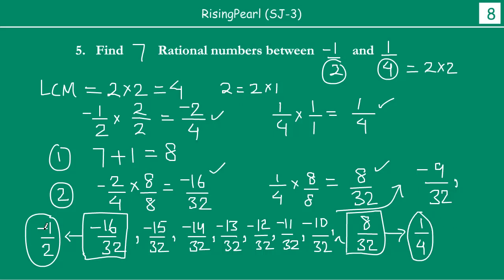You notice that between -1/2 and 1/4, which were your two original numbers, we have found 1, 2, 3, 4, 5, 6, and 7 rational numbers: -15/32, -14/32, -13/32, -12/32, -11/32, -10/32, and -9/32.